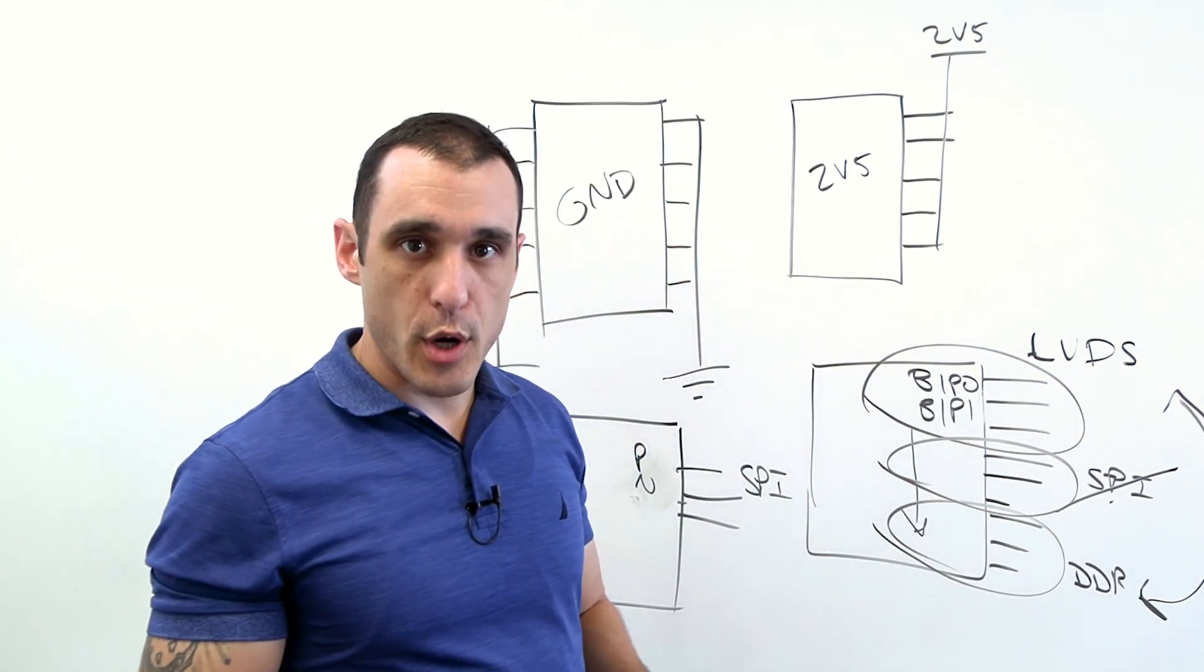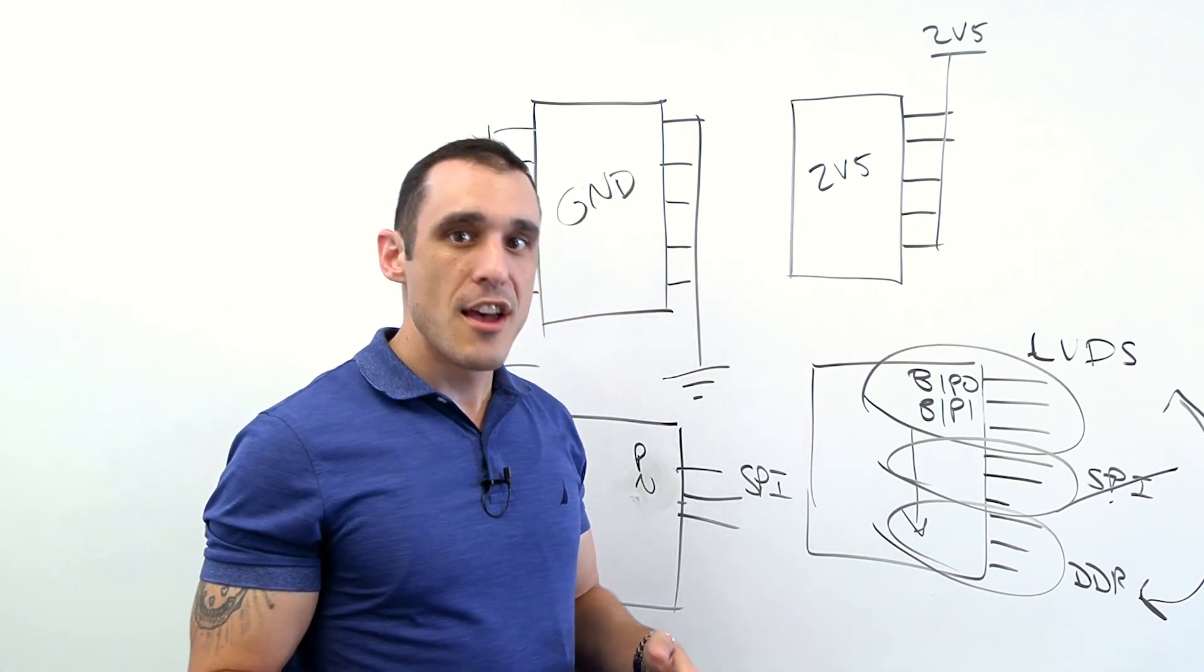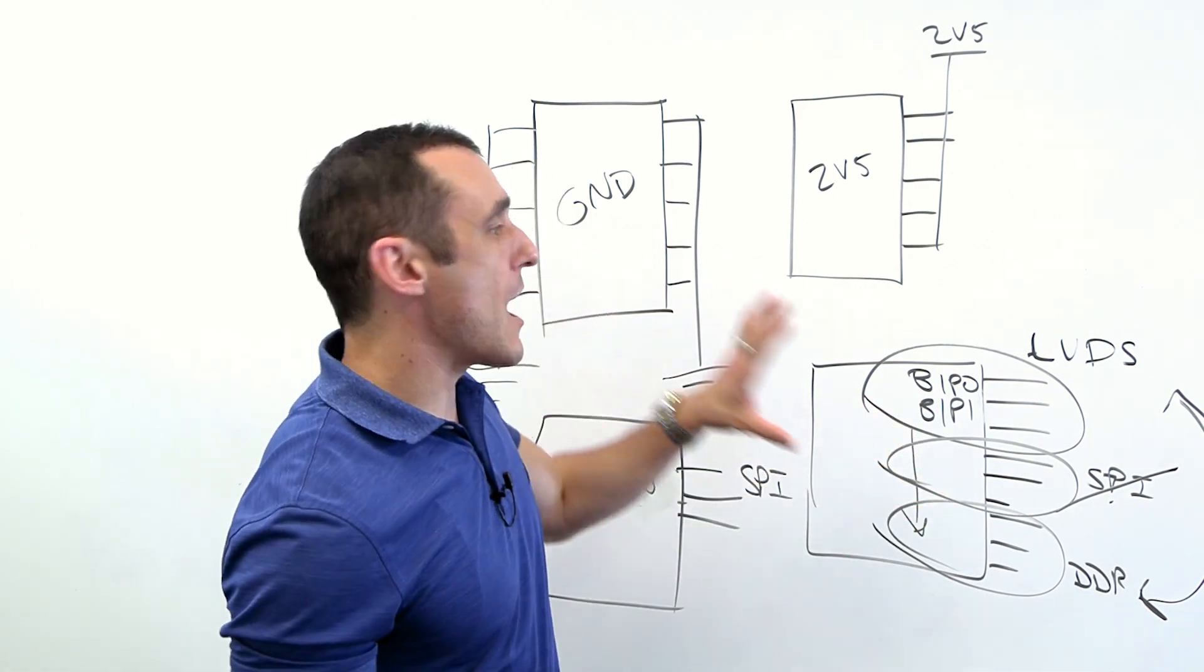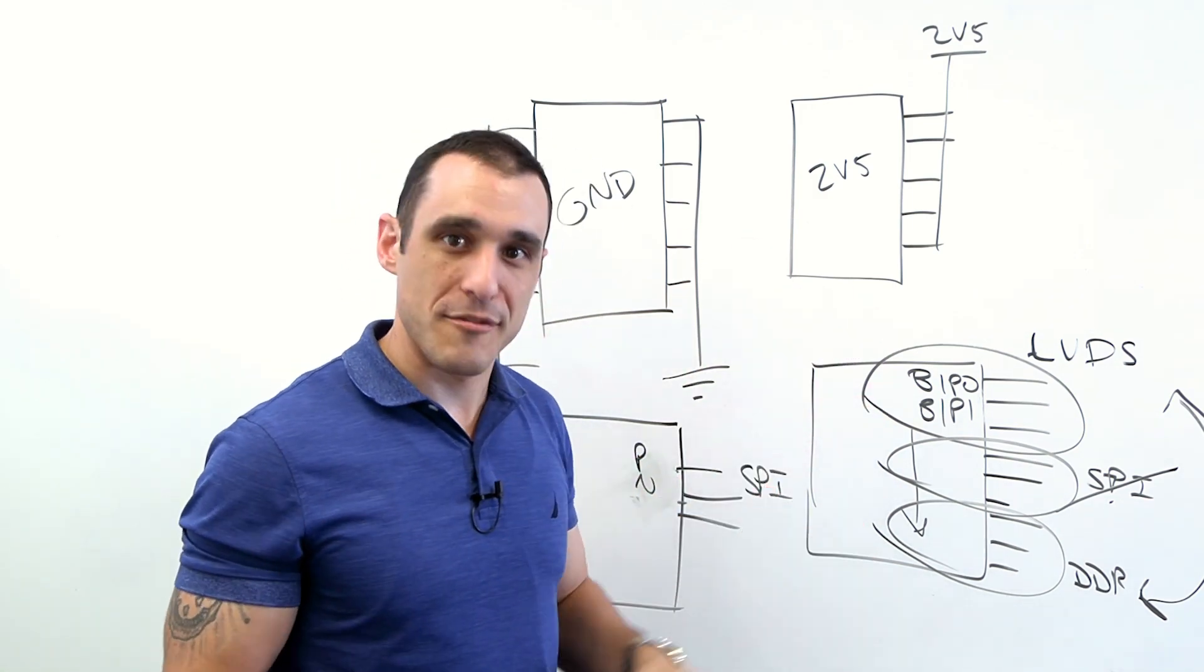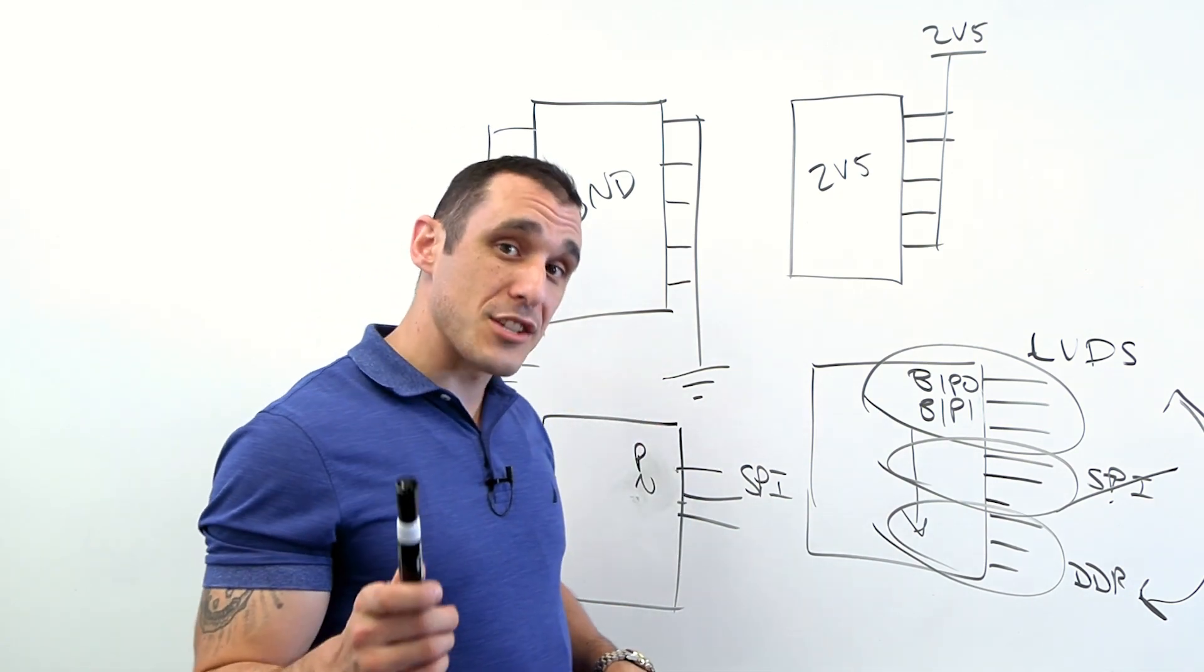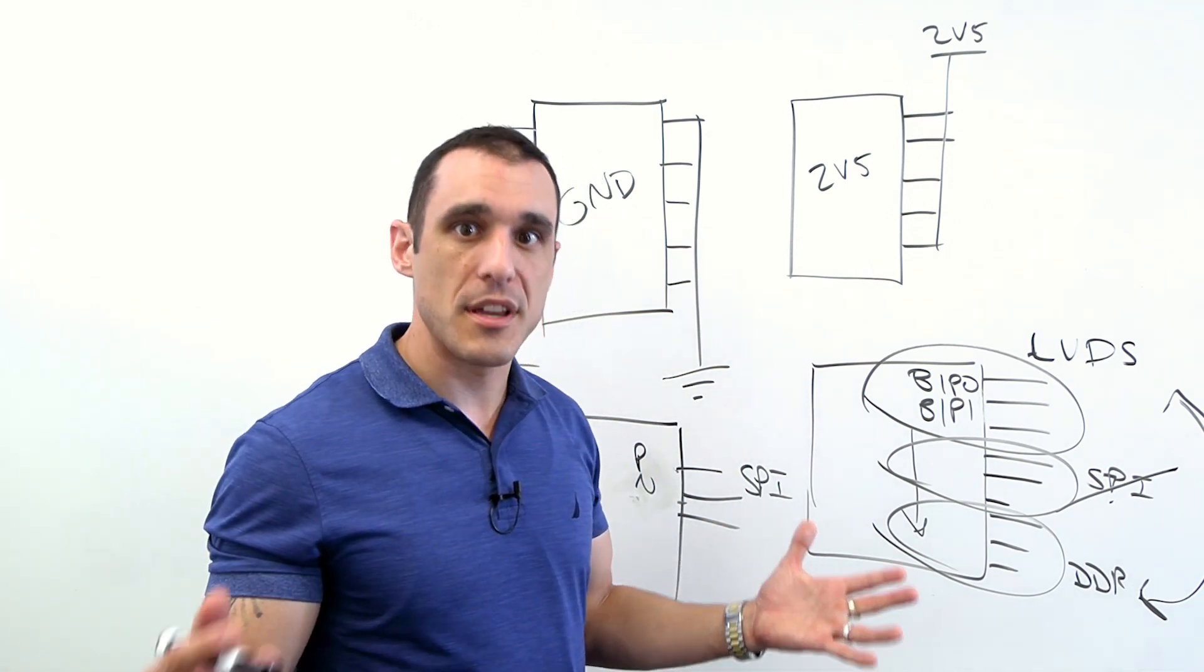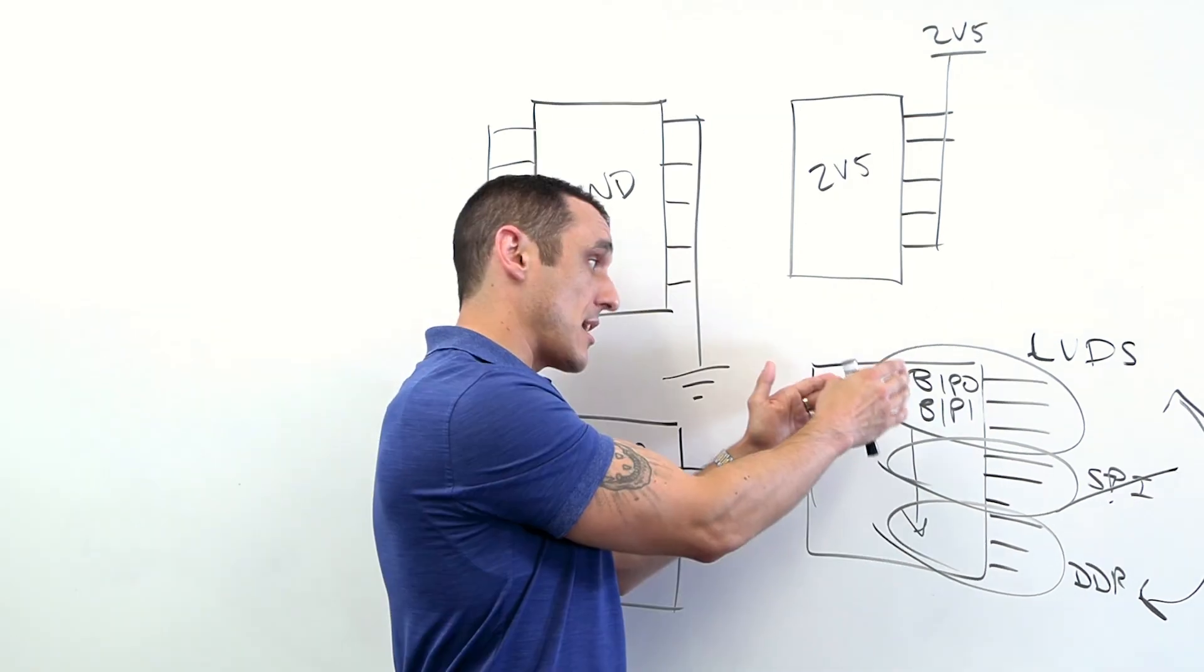So data sheets will tell you all of this if you look deep enough. The problem is that those data sheets on FPGAs can be hundreds of pages long and that's just for the general information on the component. Then once you get to the IO specifications you have another set of data sheets that could also be hundreds of pages long. So that's a lot of information to look through. By far the fastest way to get that information directly is to actually go into the developer tool and just start setting up the IOs because the developer tool will actually limit what interfaces you can assign to different pins.